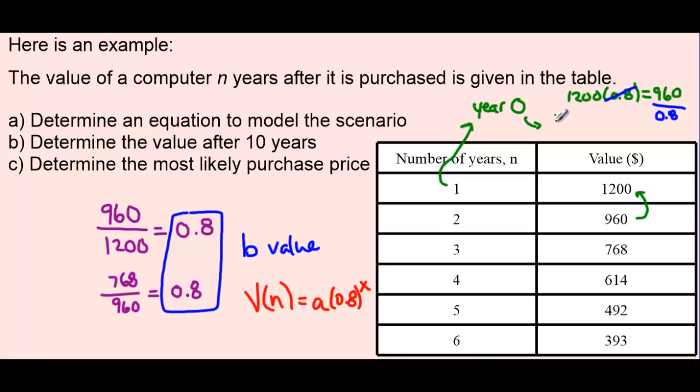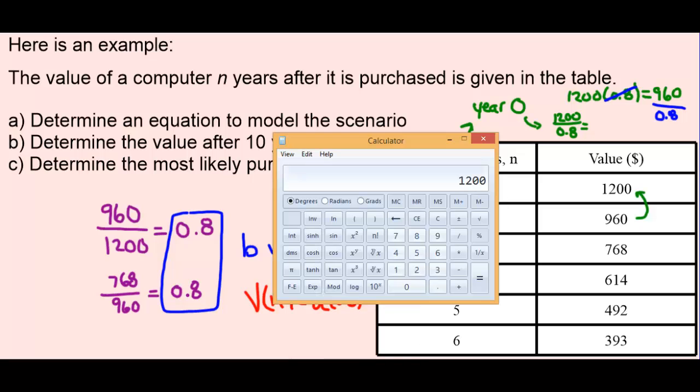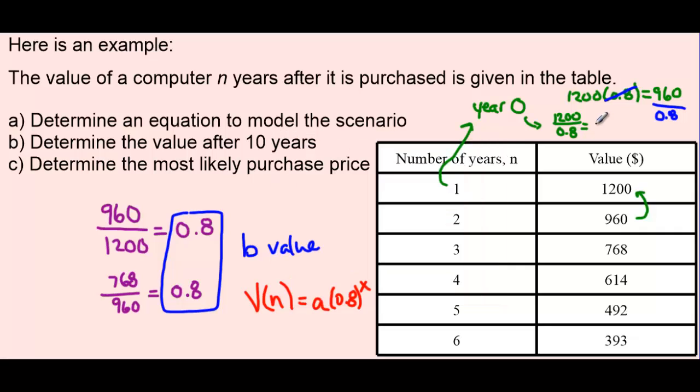So how do we then get to the year zero value? That's easy. We're going to take 1200 and divide it by 0.8. Getting our calculator out, 1200 divided by 0.8, $1,500. And that will be our initial purchase price when the number of years is at zero.